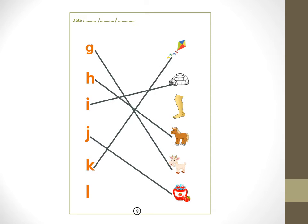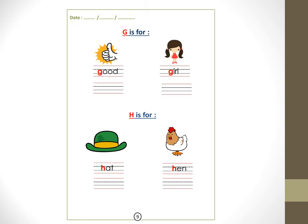L, L — leg. Now letter H, page 9. G is for good — let's write the word 'good' between the two lines. Write the word 'good.' G is for girl — G, G, girl, girl, super! H is for hat — H, H.